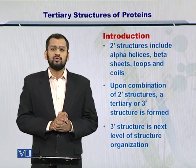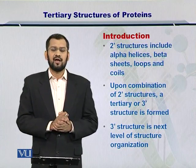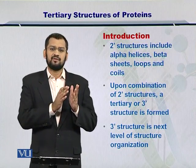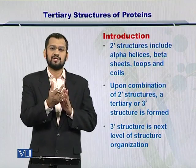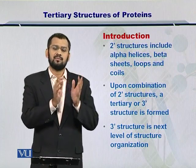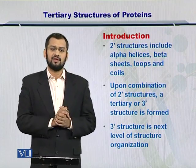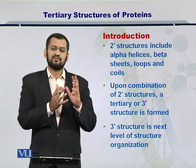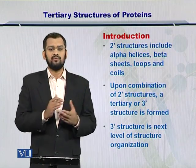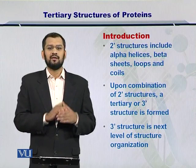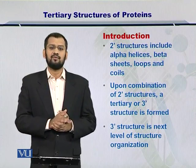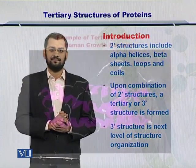An important point to note here is that there can be multiple combinations in which the alpha helices, beta sheets, turns, and loops can be organized. So, if they can be organized in so many combinations, then obviously the tertiary structures of the proteins can have a large variety in them.